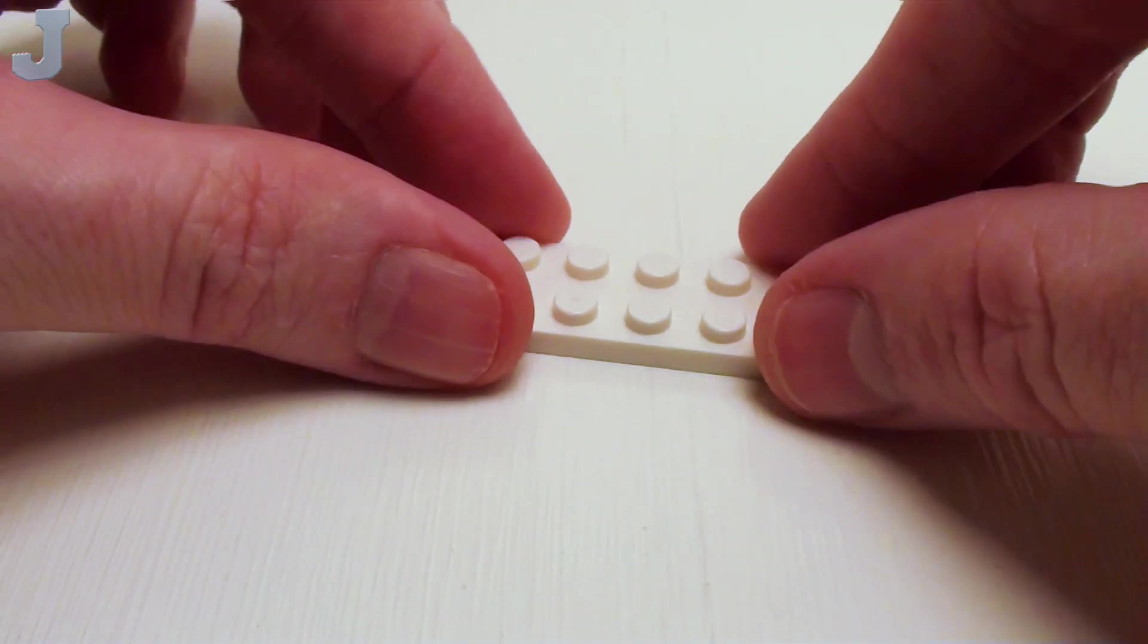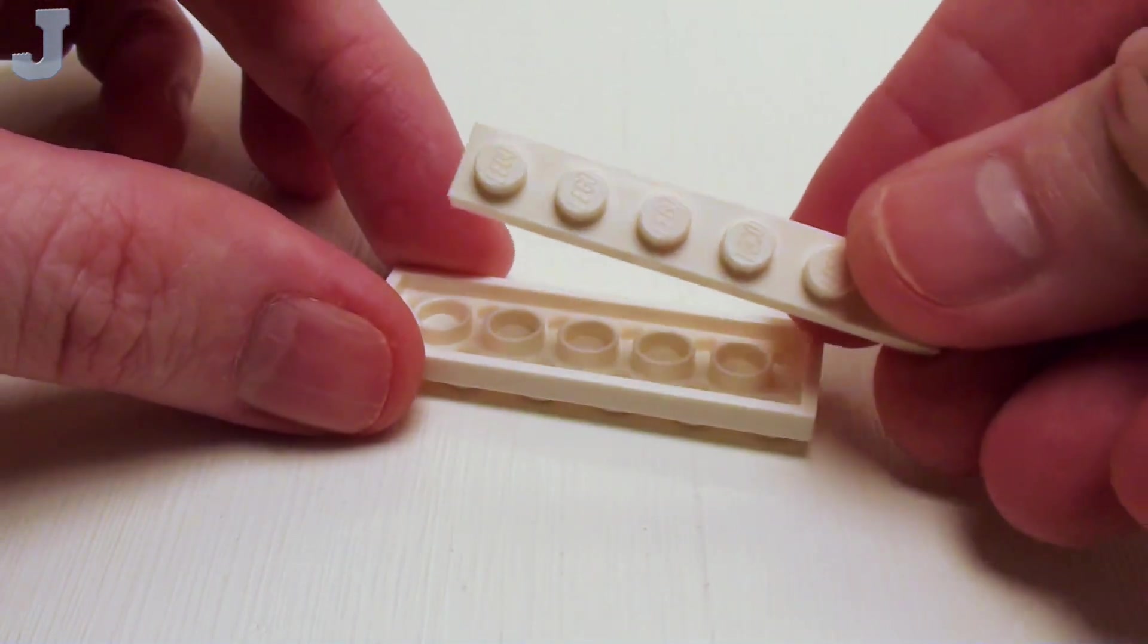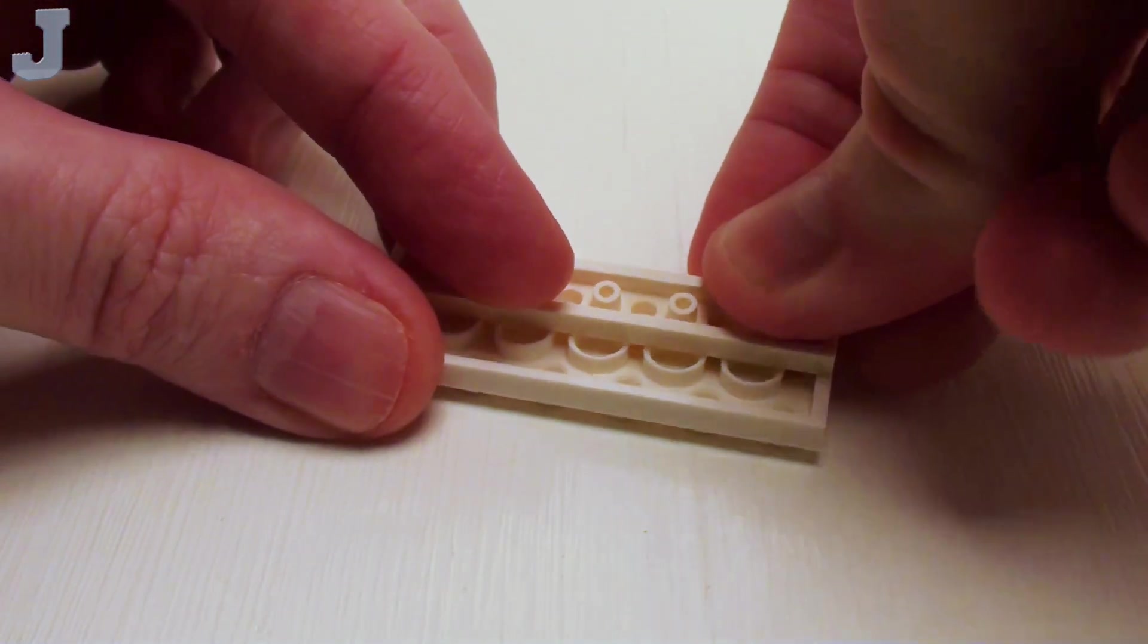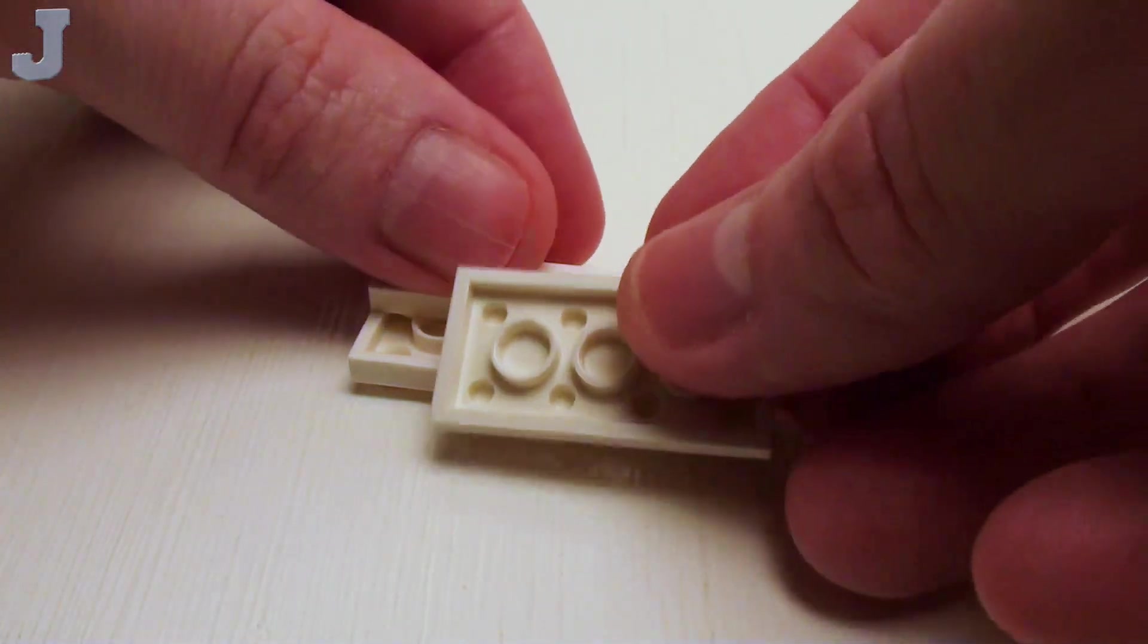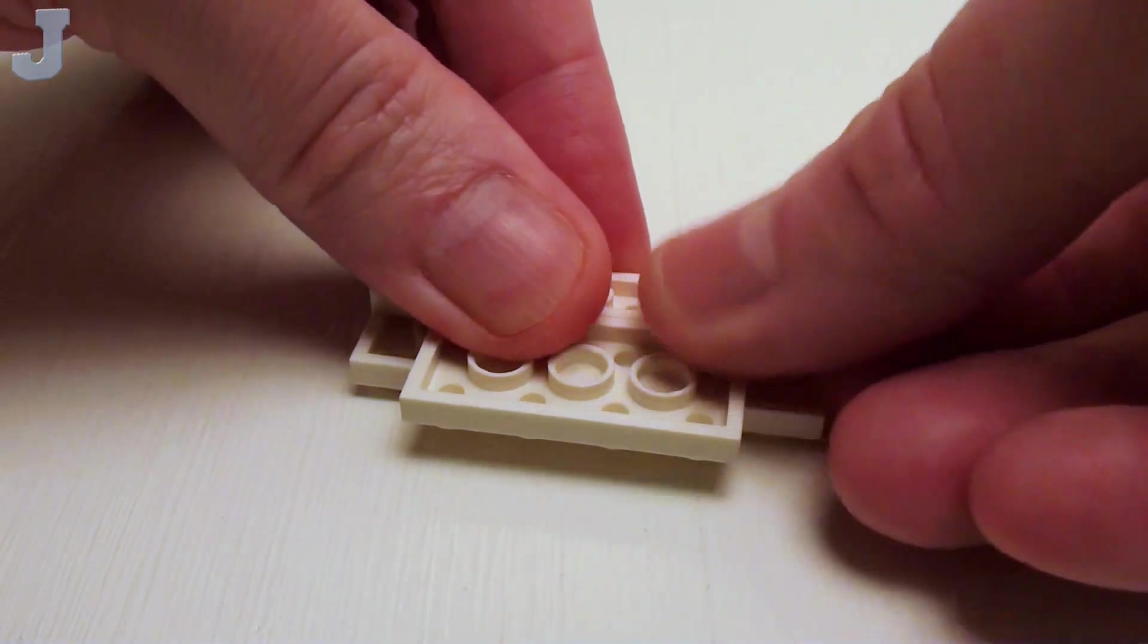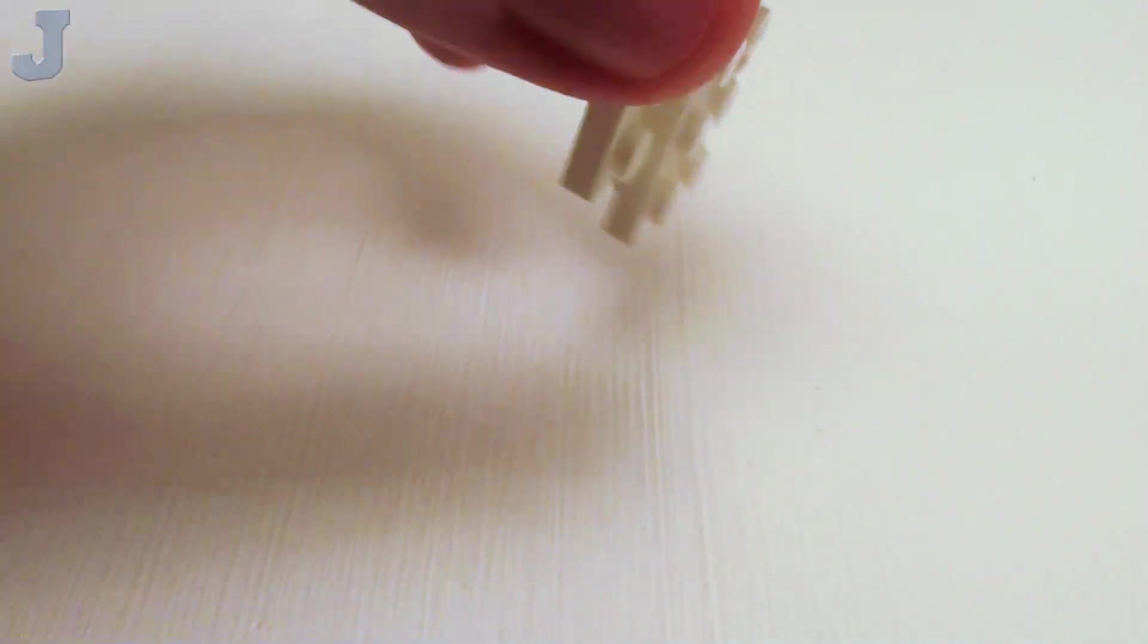For our bench swing, let's take a 2x6 plate. We're going to flip this over and set down a 1x6 plate on one side. Then I'm going to place a 2x4 plate right here. Now we're going to flip this over.